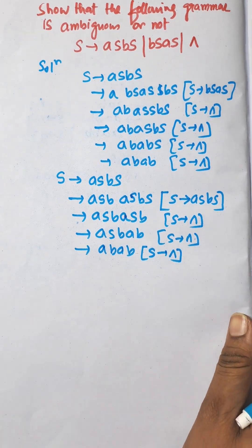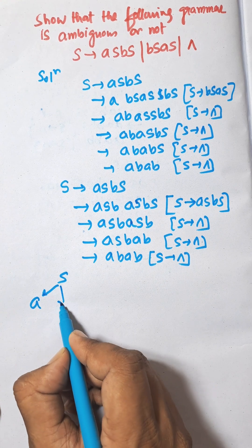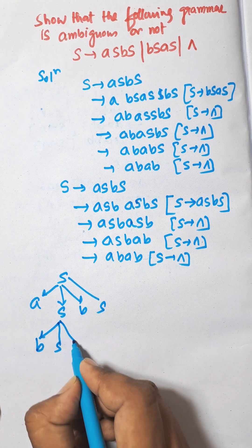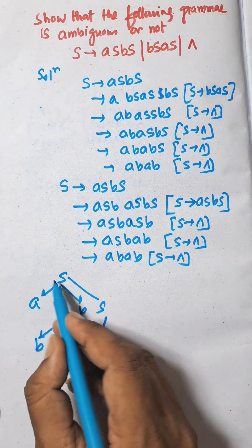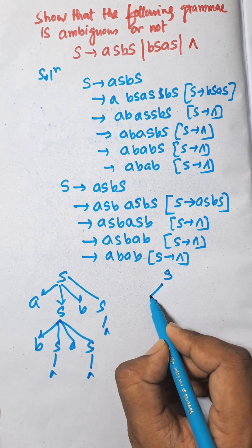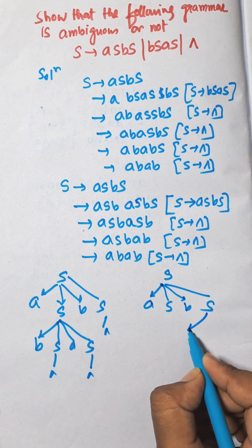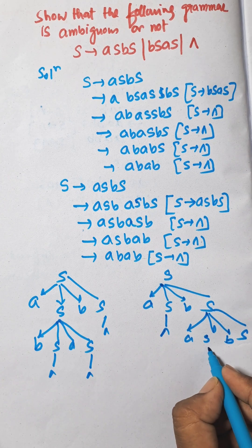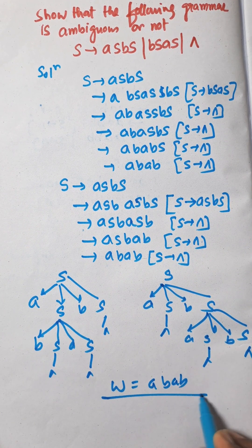The same string can be created in two different ways. In the first case, the parse tree is: S → aSbS, then S → baSaS, and S is empty, S is empty. In the second case: S → aSbS, then S → aSbS again, S is empty, S is empty. In both cases the same string w = abab is produced, so this grammar is ambiguous.